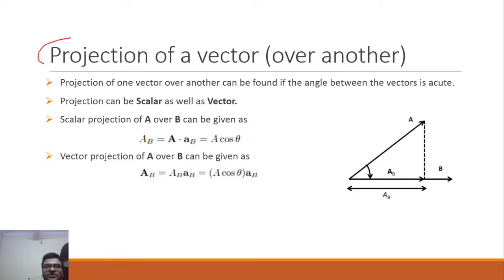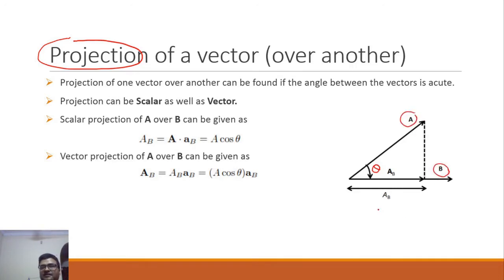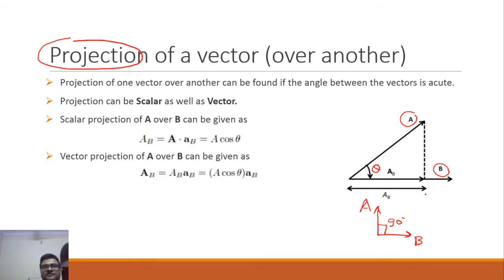Projection of one vector over another is possible only because two vectors have some acute angle between them. If vector a and vector b have 90 degrees between them, they are called orthogonal vectors. In vector physics or electromagnetic theory, two orthogonal vector quantities never contribute towards each other — they won't increase each other's magnitude and are not projected over each other.